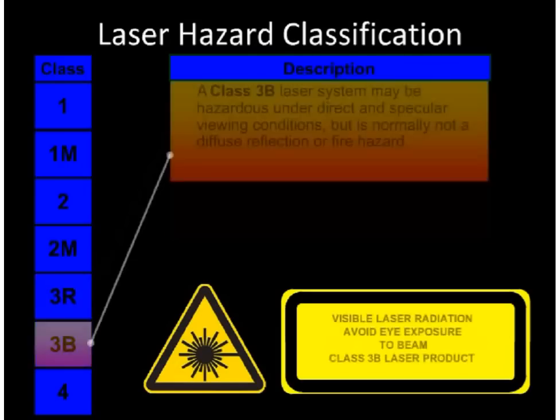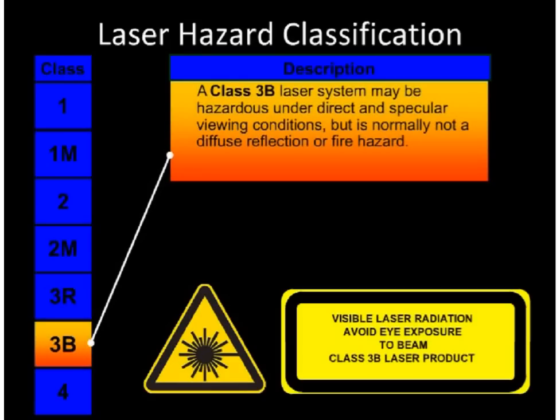Class 3B. Eye damage is likely to occur if the beam is viewed directly or reflected from a shiny, mirror-like surface, including an accidental or momentary exposure. If the laser emissions are near the upper limits for Class 3B, the laser light might be capable of producing minor skin injuries or even pose a risk of igniting flammable materials.